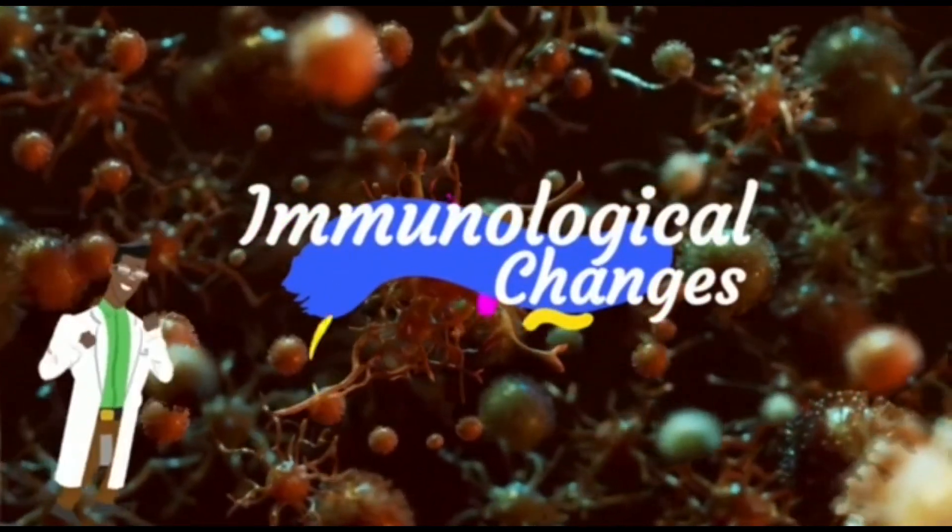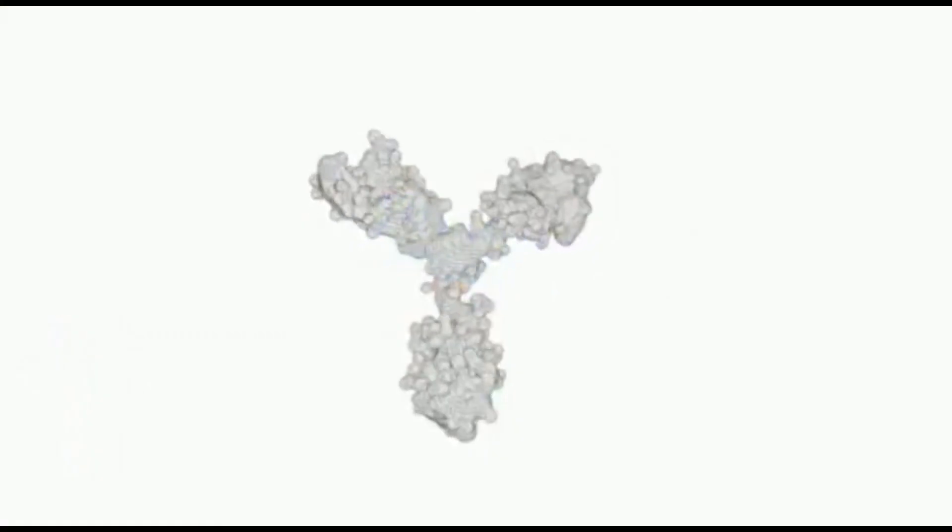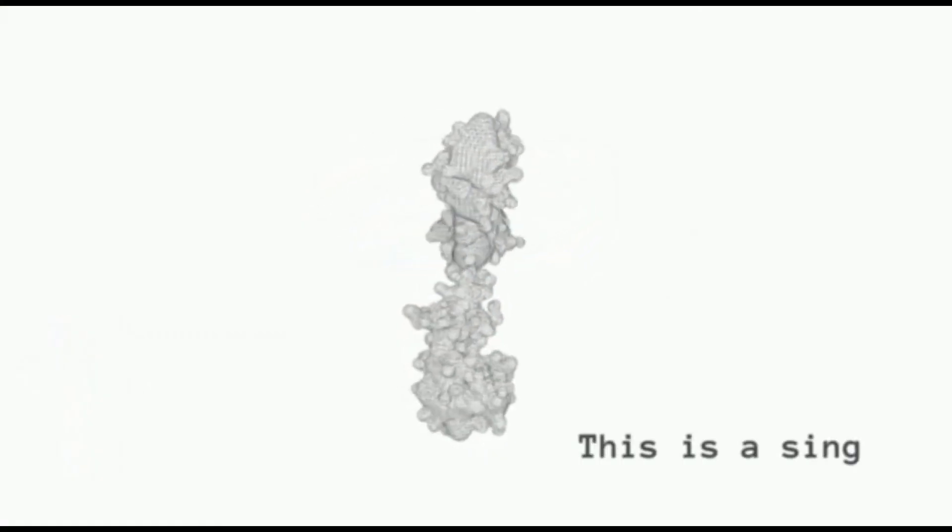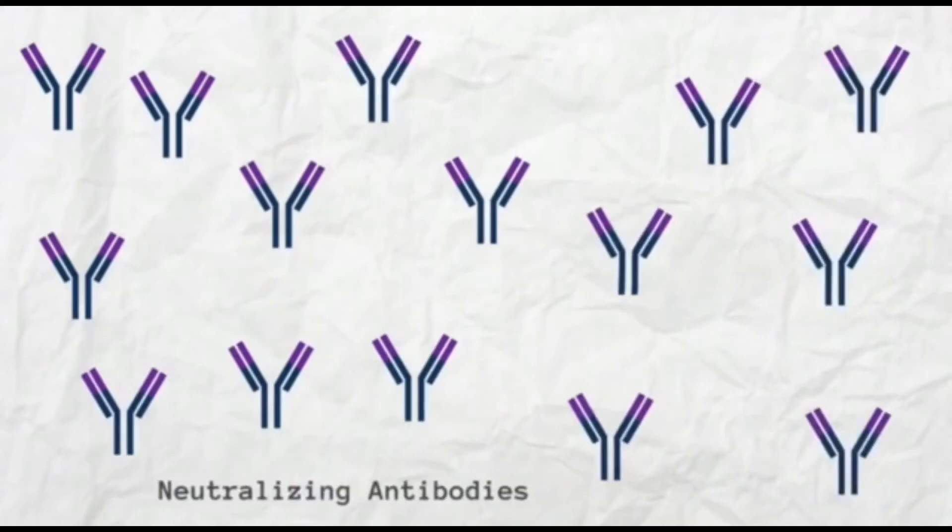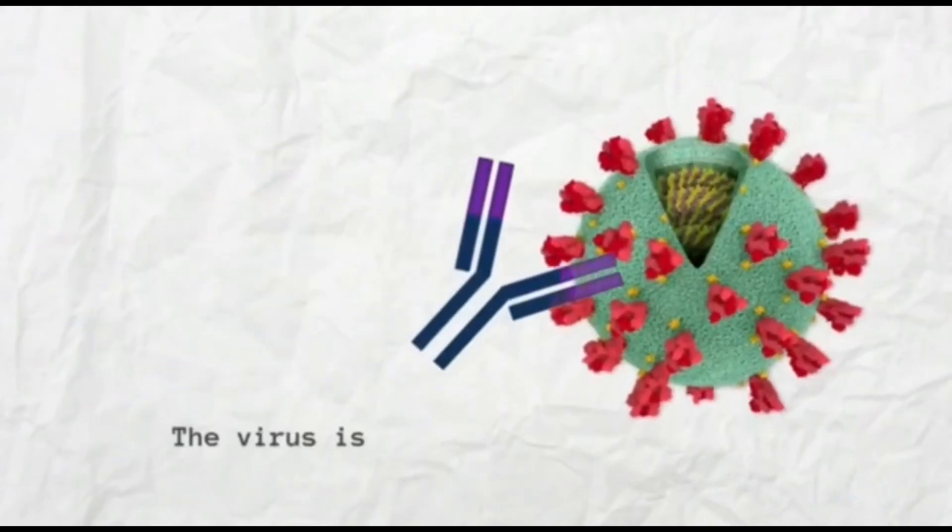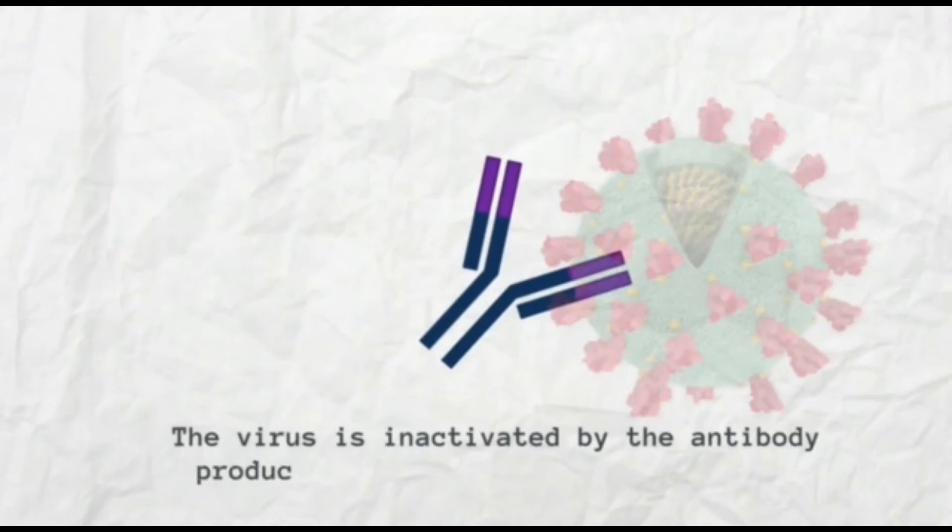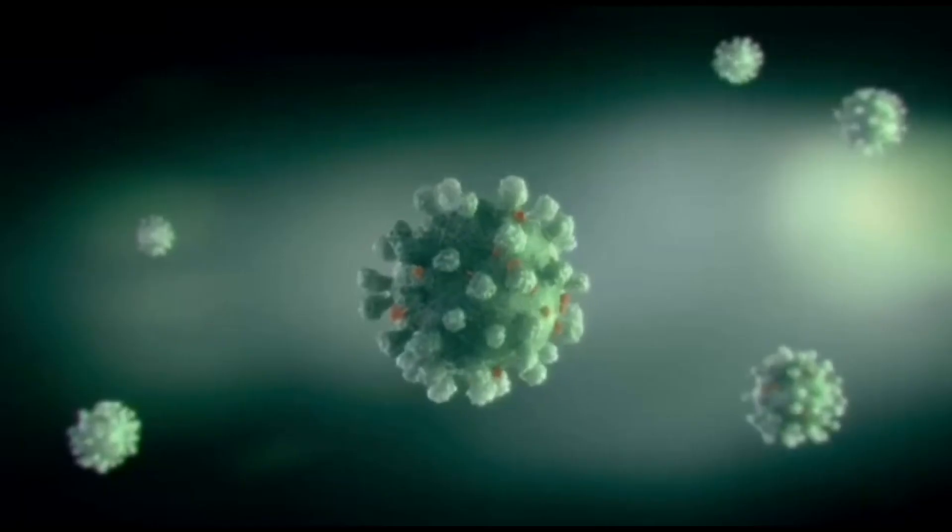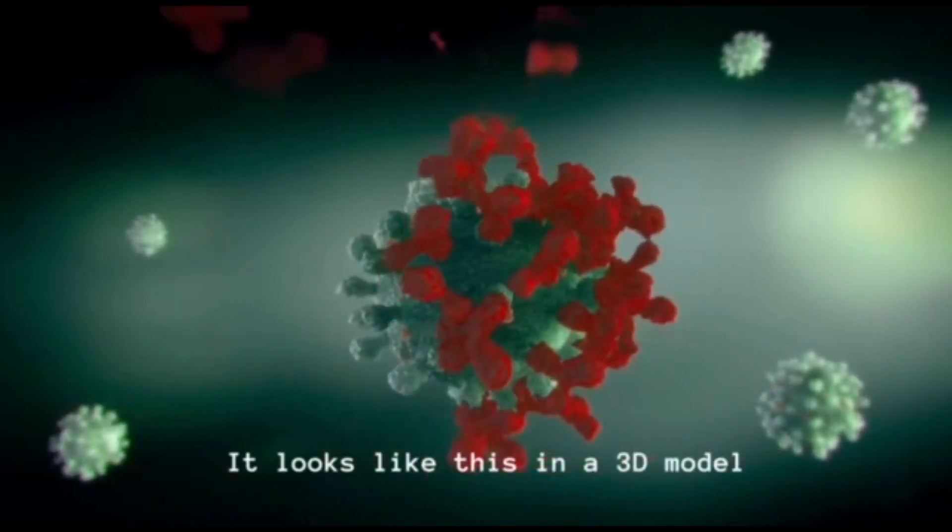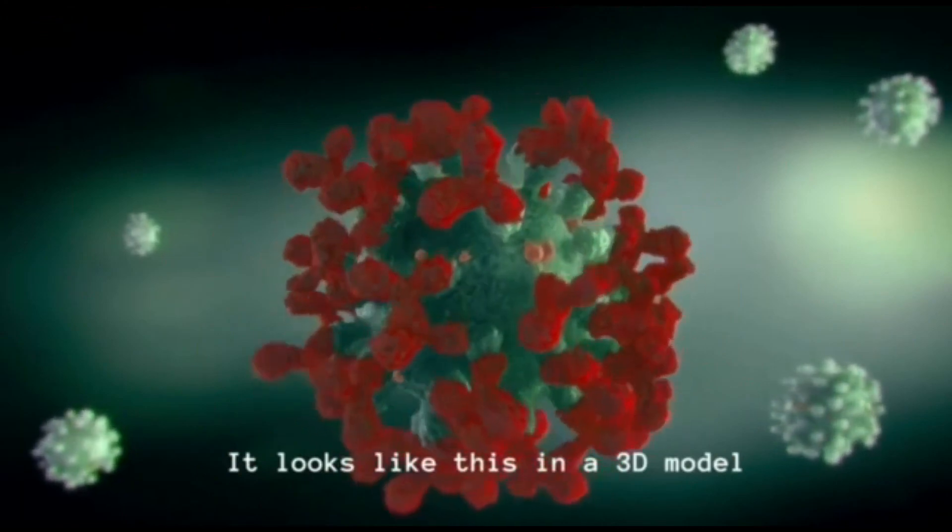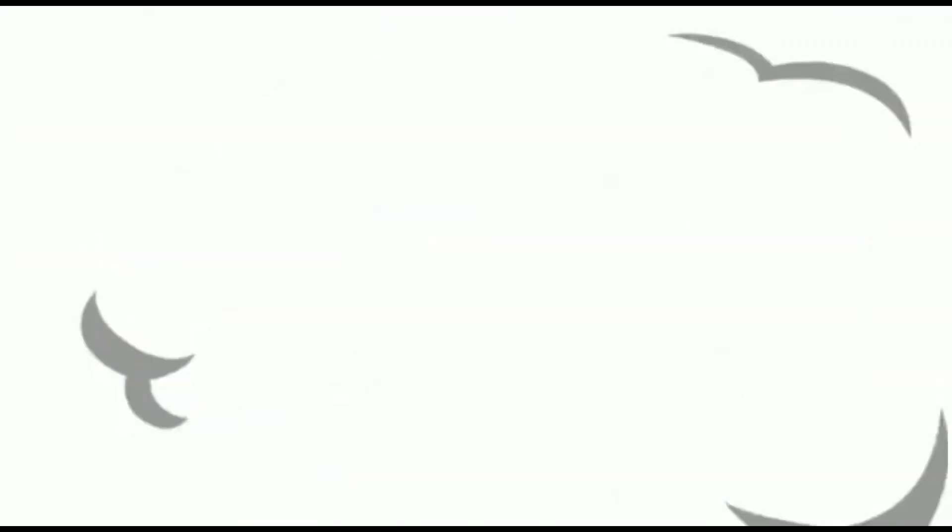Second one is immunological changes. This is a single antibody molecule. And in a virus infection, your body, the human body or any host body, produces neutralizing antibodies. The virus is inactivated by these antibodies produced by your body or it can be given intravenously in an antibody therapy. In a 3D model, as you can see, the virus literally is inactivated by the antibodies.